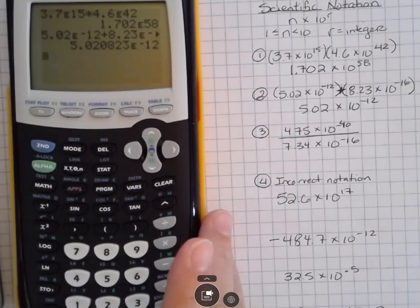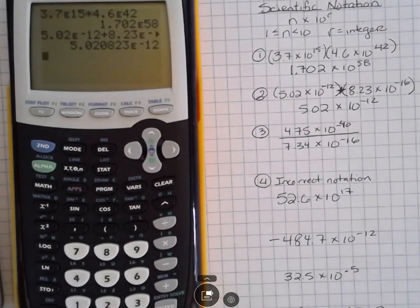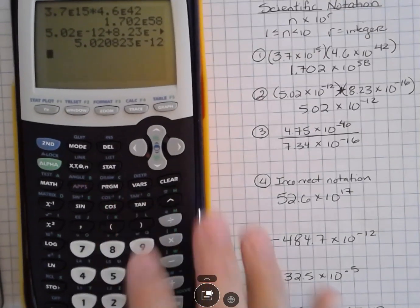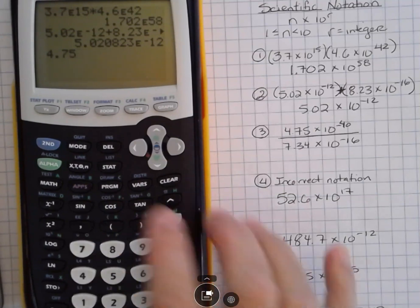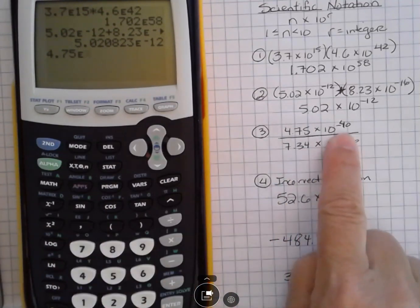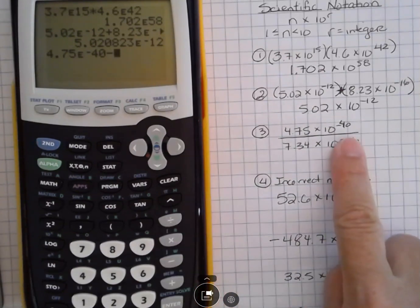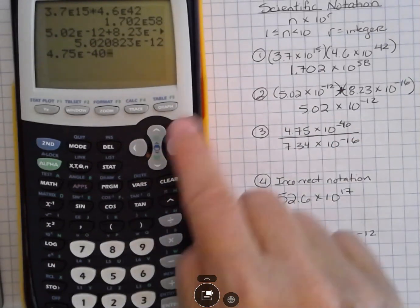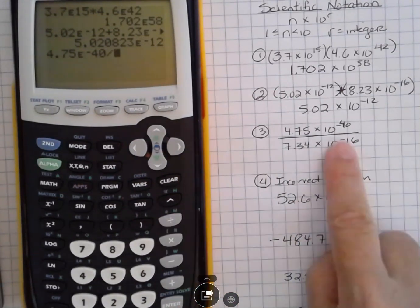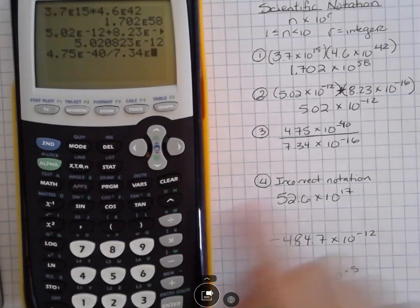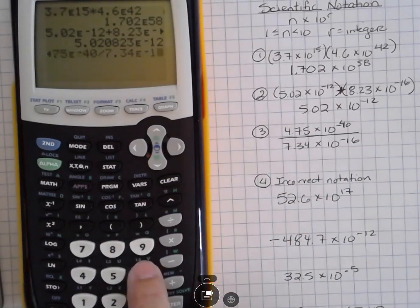In the next one, we're going to divide. I can put parentheses around the numerator, but I don't need to for this, so I'm just going to go ahead and enter 4.75, second function EE, negative 40, and then divide by. Whoops, I didn't do division. Remember, you can always go back and type over that. Divide by 7.34, second function EE, negative 16, and hit enter.